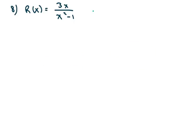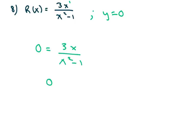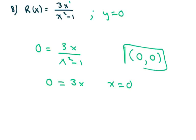Again, this one is y equals 0 because the degree in the numerator is smaller. Setting this to 0 and cross multiplying gives 0 equals 3x, so x is 0. It crosses at the origin, at the horizontal asymptote.